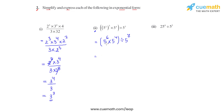Inside the brackets we have a multiplication, and the bases are the same, so the powers get added: we get 5 raised to 10, divided by 5 raised to 7. Applying the quotient law, we subtract the powers: 10 minus 7 gives 3. So the final answer is 5 raised to 3.